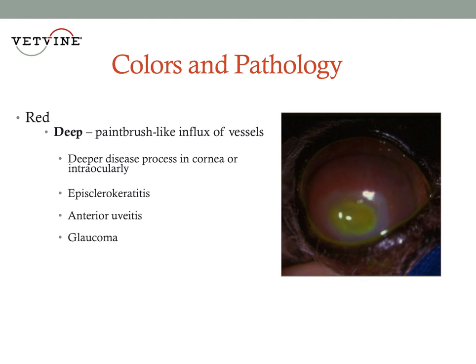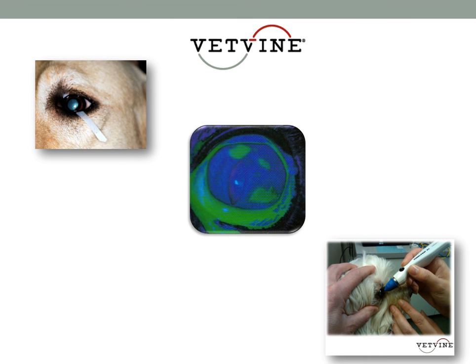So when we see a patient with corneal vascularization, our minimum database on virtually all patients should include a Schirmer tear test, a fluorescein stain to assess for the presence of corneal ulceration, because this is certainly going to impact our management of the patient. And if the patient warrants it, checking the intraocular pressure to rule out glaucoma.